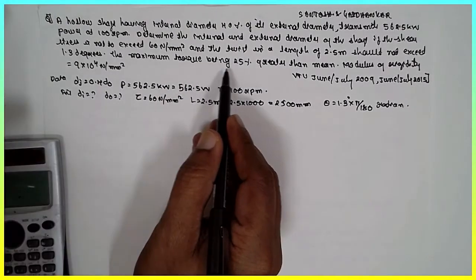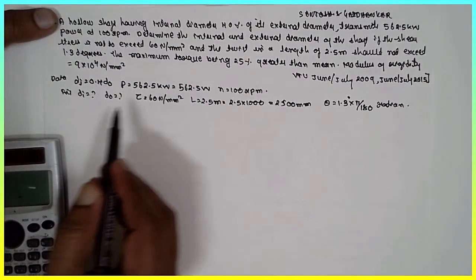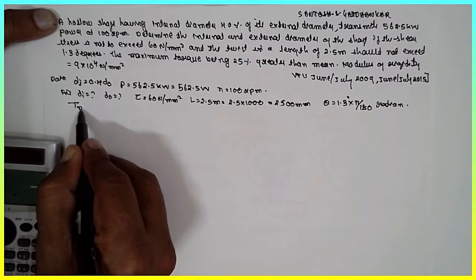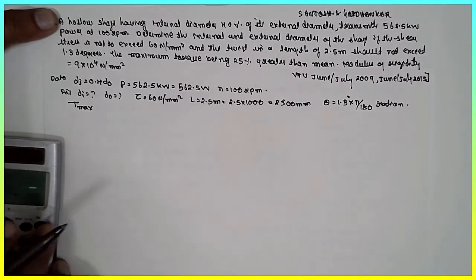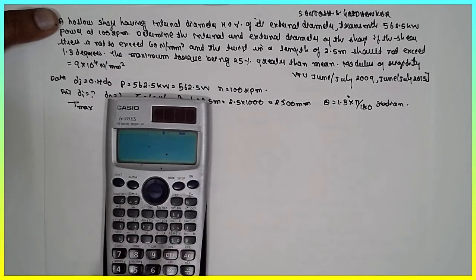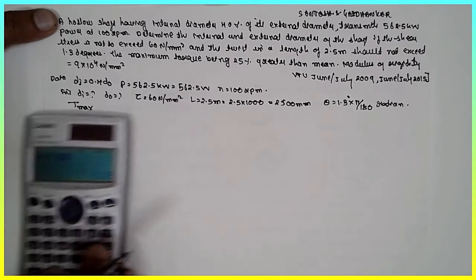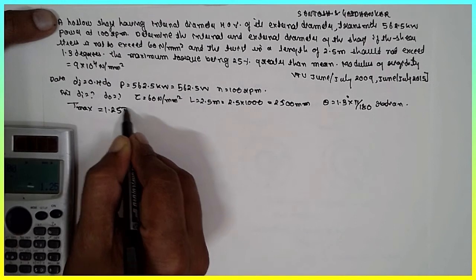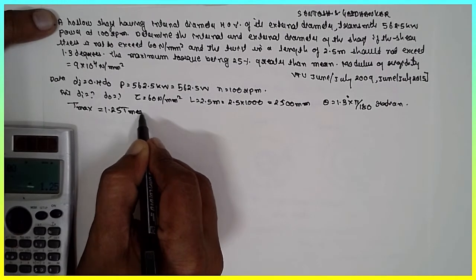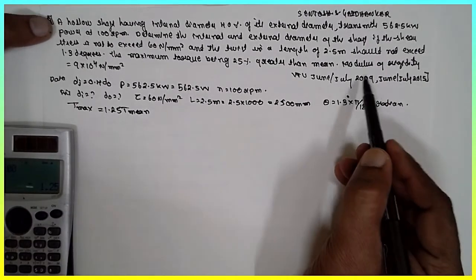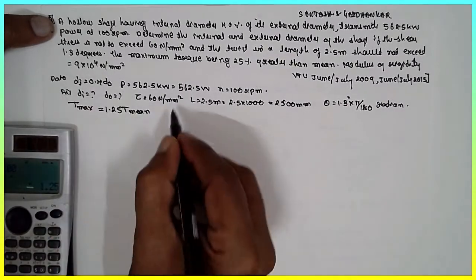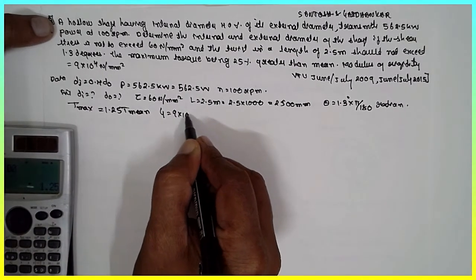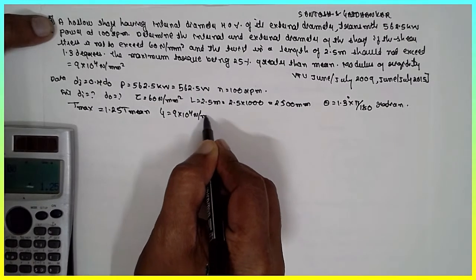The maximum torque is 25% greater than the mean torque, so T_max = (100 + 25)/100 × T_mean = 1.25 × T_mean. The modulus of rigidity G = 9 × 10⁴ N/mm².